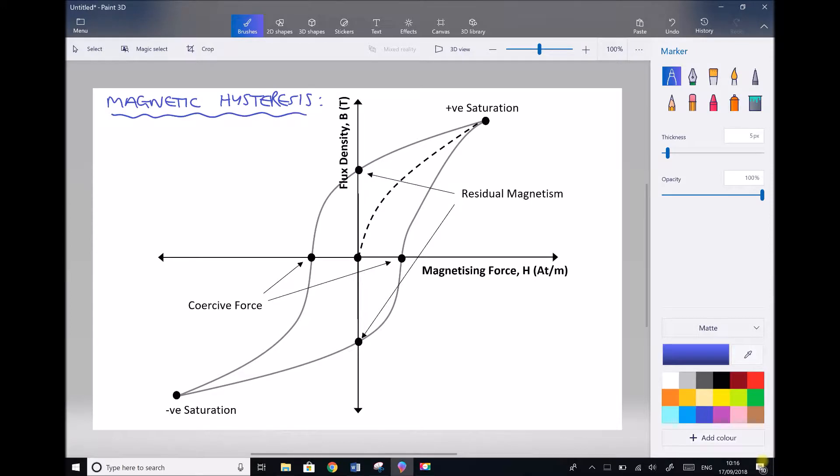That's going to be dependent on the frequency of the supply. So let's say for example we connect a generator to a 50 Hertz supply - that means the north and south poles of that stator are going to oscillate or change 50 times every second.